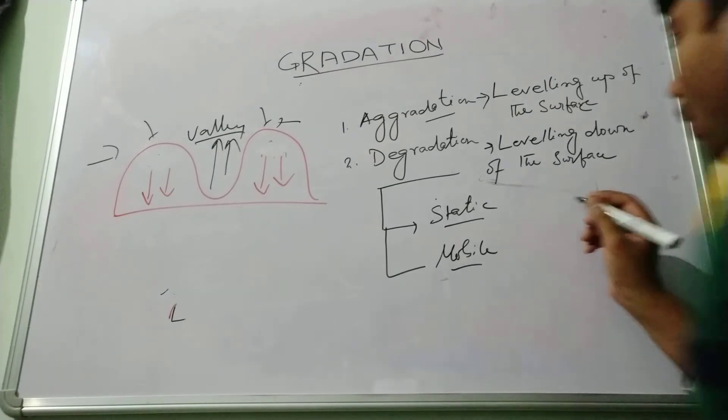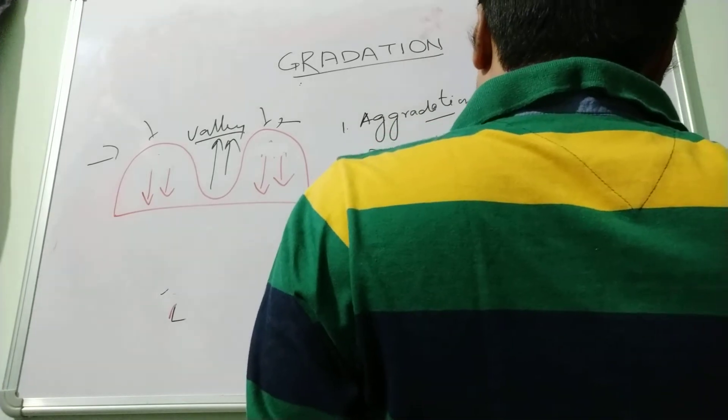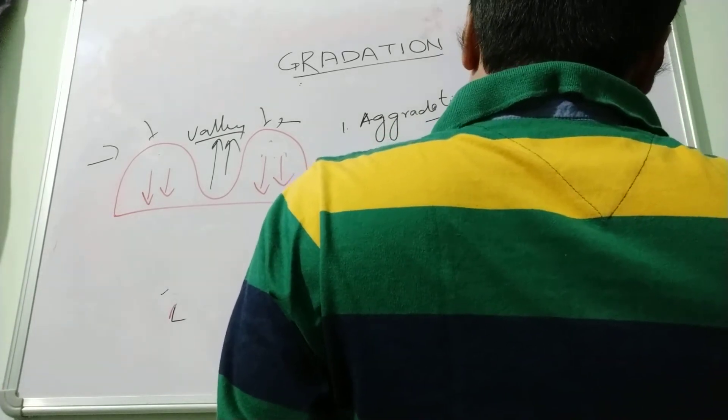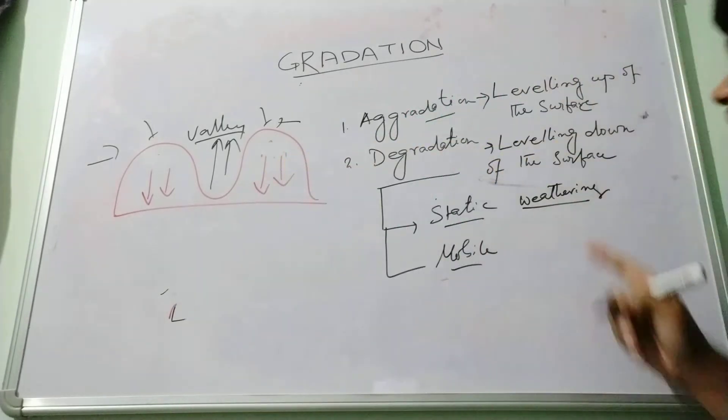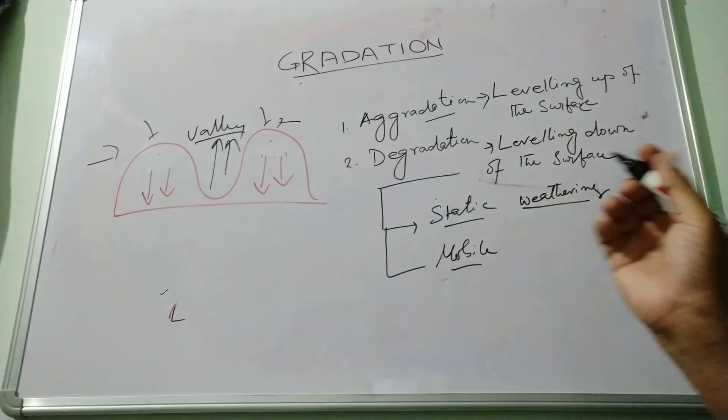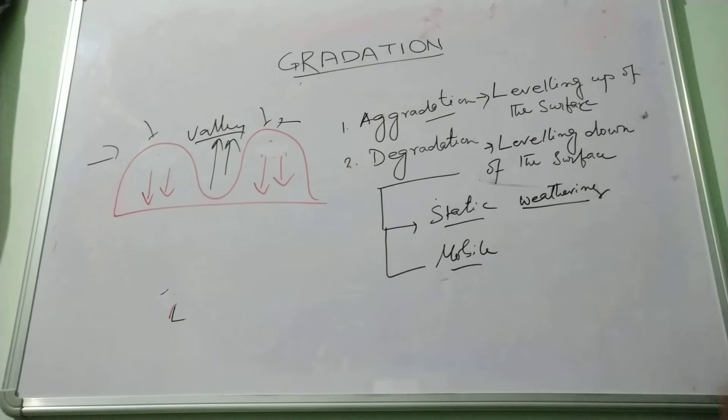Static, like weathering. For example, weathering means there is disintegration or decomposition of the rock in situ, which is a static process. There is no movement of the particles involved. Weathering means there is no movement of the rock in situ. What about the mobile process?